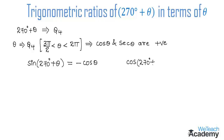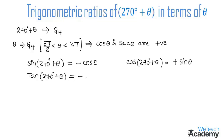Now for cos(270° + θ): in the fourth quadrant, cos is positive, so we get a positive result. Since 270 is odd, cos changes to sine, giving us positive sine theta. Similarly for tan(270° + θ): tan is negative in the fourth quadrant, and tan changes to cot, so we get minus cot theta as the result.